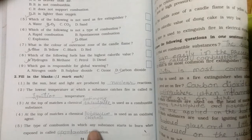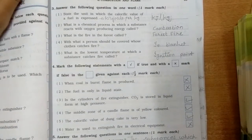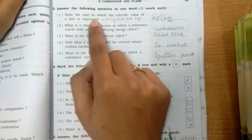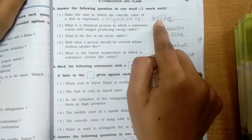Fifth, the type of combustion in which any substance starts to burn when exposed is called spontaneous combustion. Next, question number 3. Answer in one word. First, state the unit in which calorific value of a fuel is expressed. Kilojoule per kg.